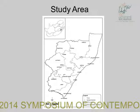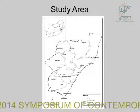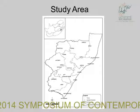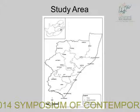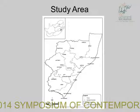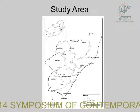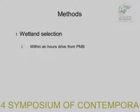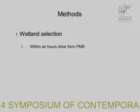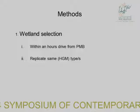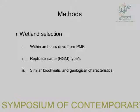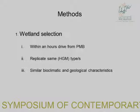This was my study area. All my wetlands are around Pietermaritzburg; the furthest are in Underberg and Camperdown. Wetland selection criteria required that they be within an hour's drive from Pietermaritzburg for cost-effectiveness. I had to use the same hydrogeomorphic type, since different types support different animals, and they had to be in a similar bioclimatic and geological context — that's why they're all clustered around Pietermaritzburg.